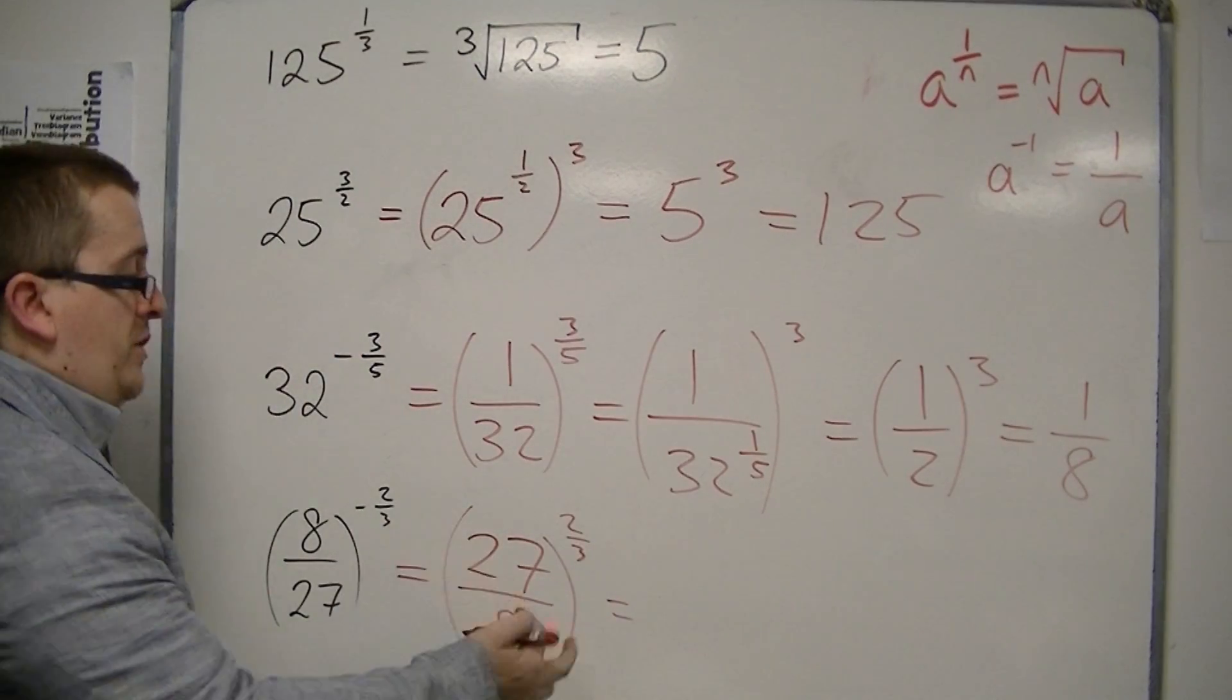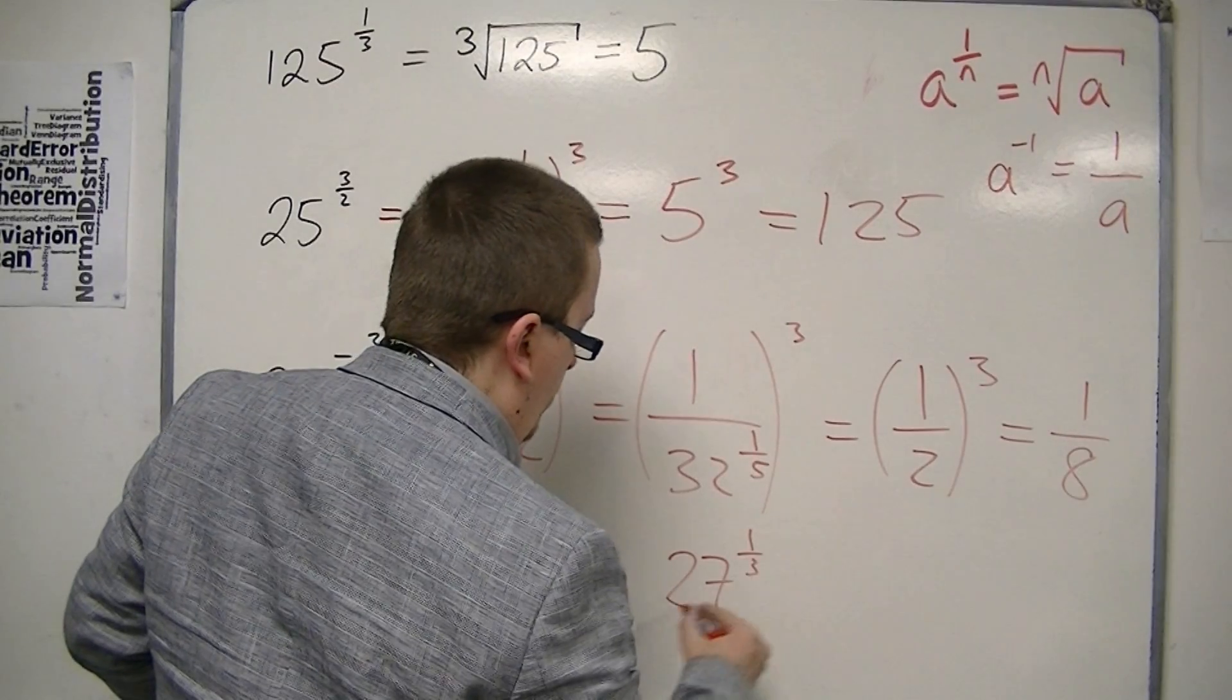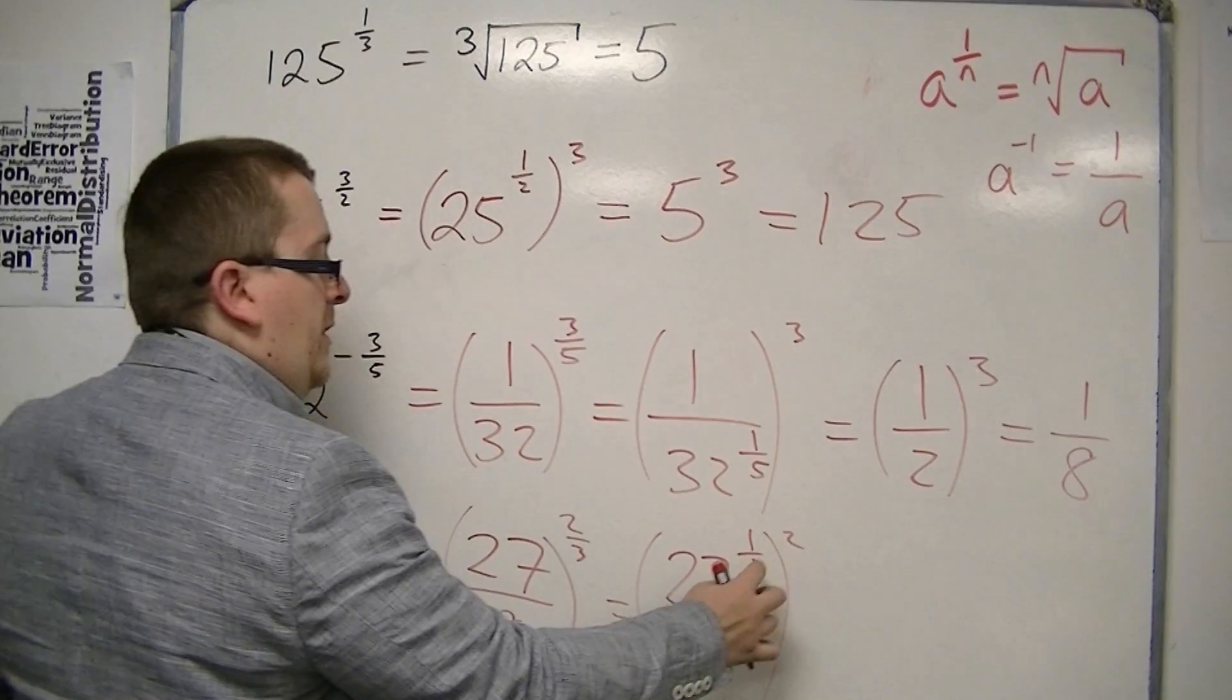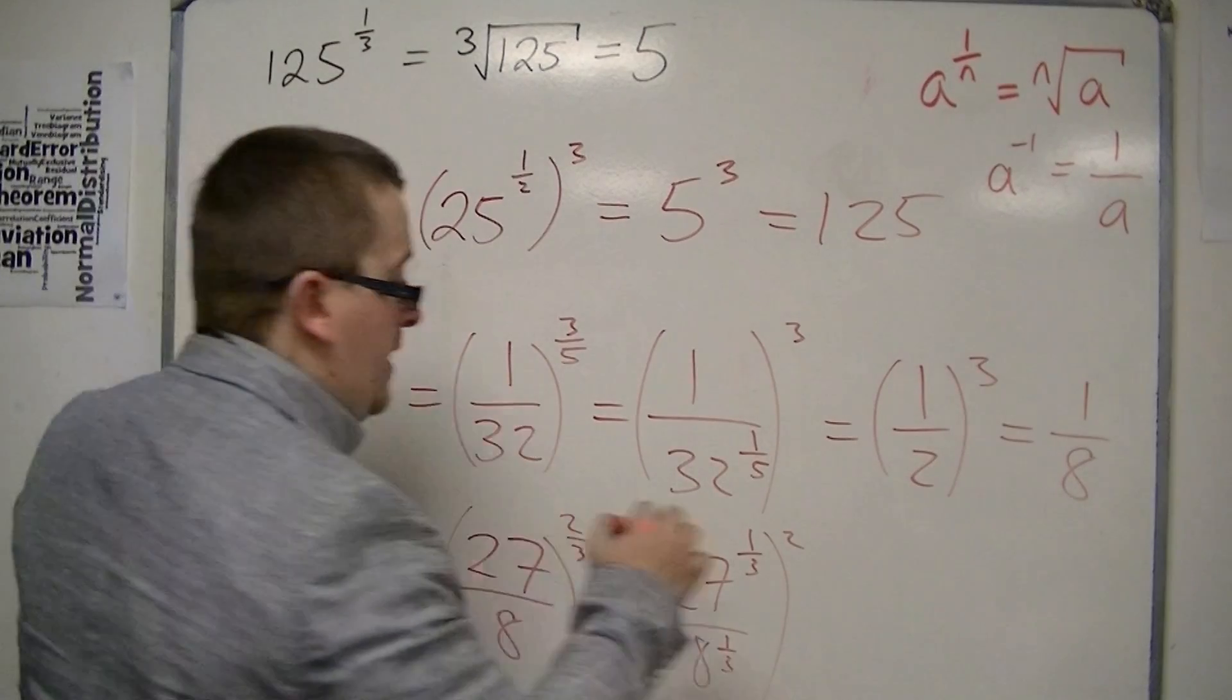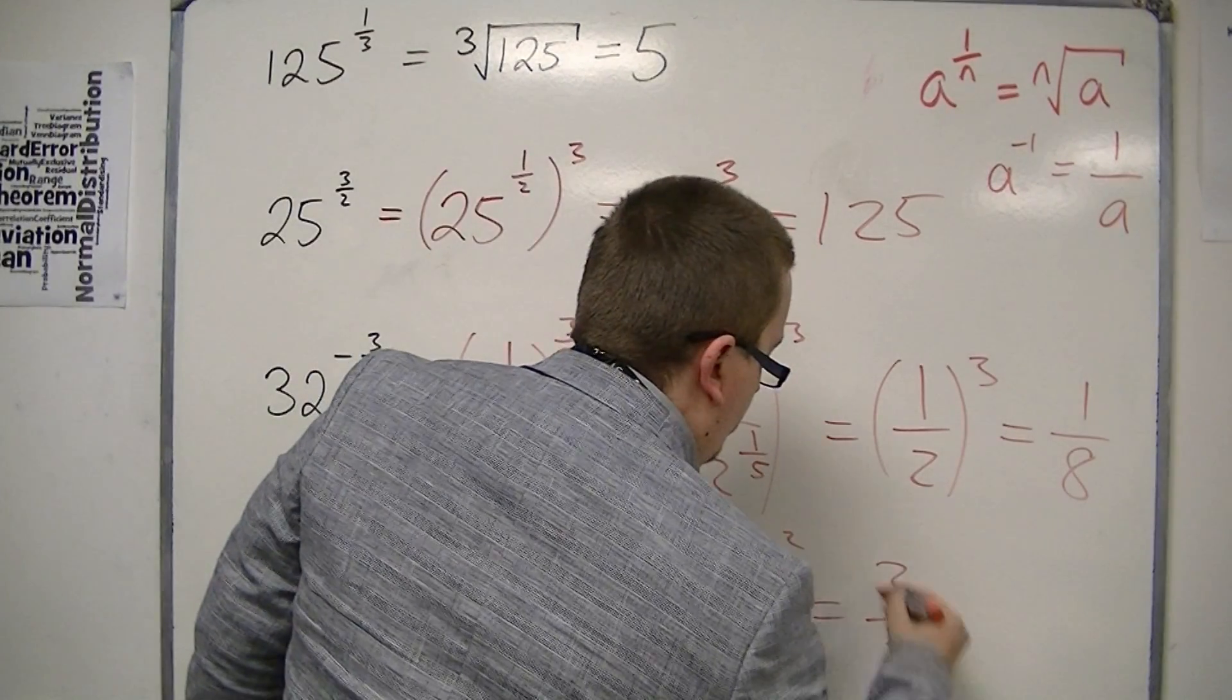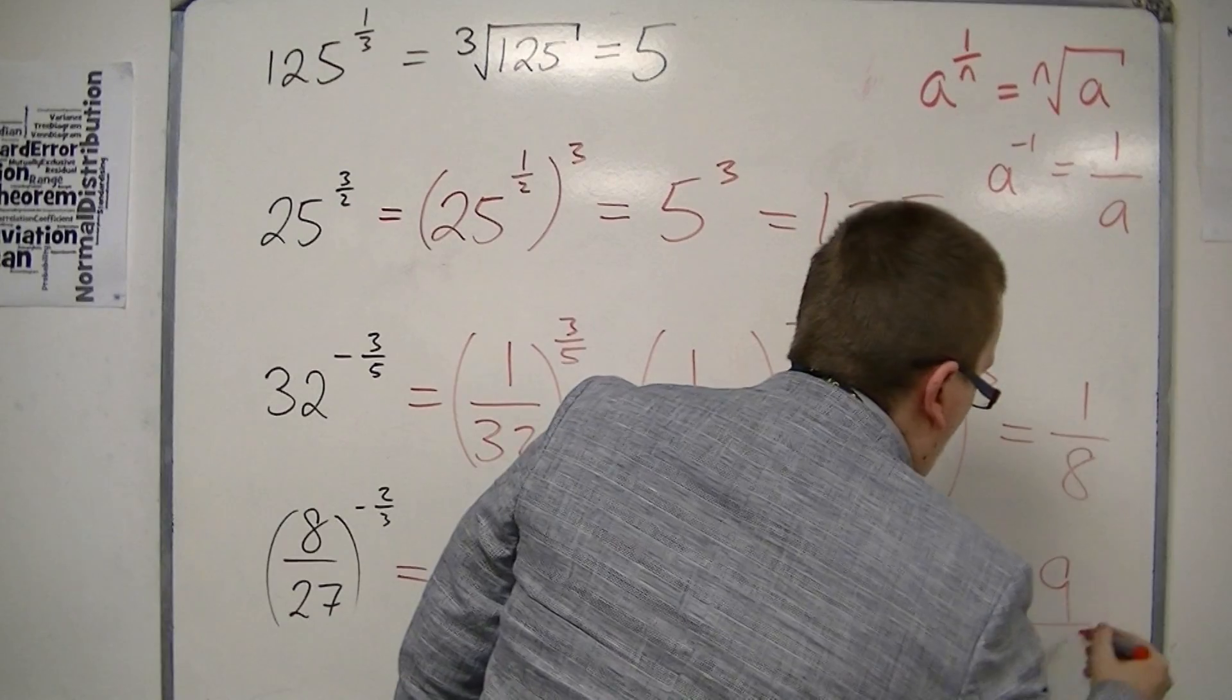Now we do the denominator first. We're going to find the cube root of the top over the cube root of the bottom, and then square our answer, because 1 third times 2 is 2 thirds. The cube root of 27 is 3. The cube root of 8 is 2. So this is 3 halves squared, which is 9 over 4.